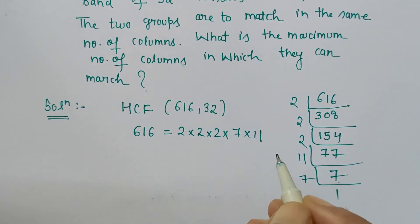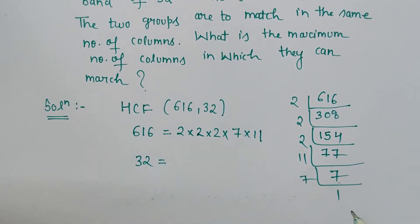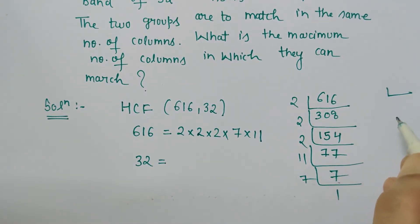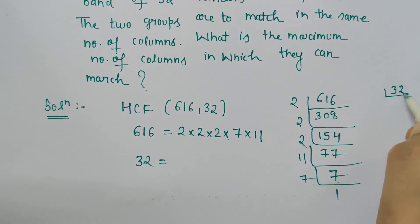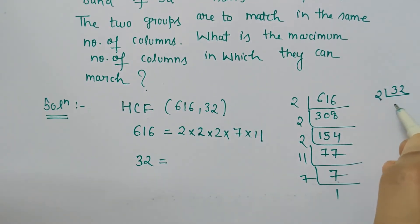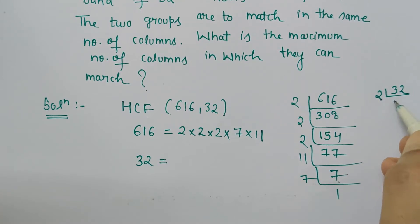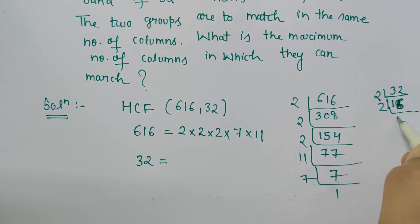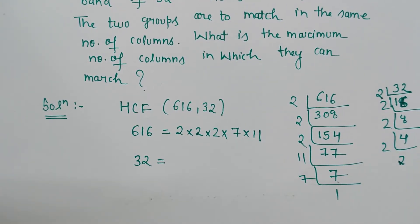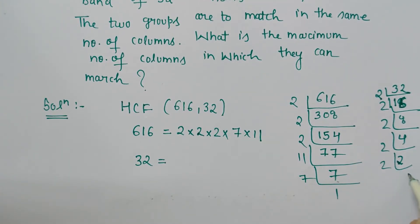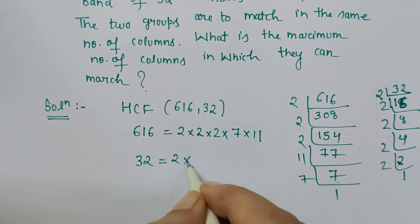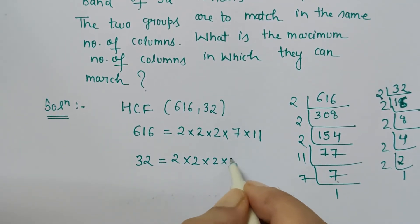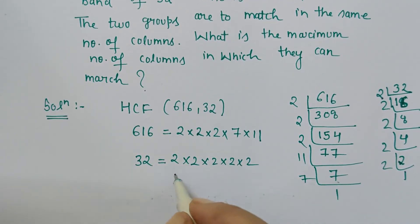And 32 is nothing but a product of 2 only — 2 multiplied 5 times. Let's check: 2×2=4, 4×2=8, 8×2=16, 16×2=32. So 32 = 2 × 2 × 2 × 2 × 2.